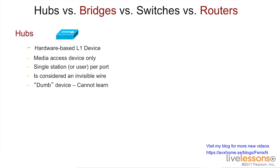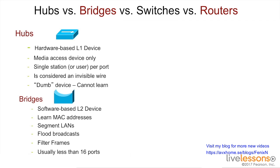The hub was mainly invented to help us create star topologies. A bridge is where we start to talk about optimizing the network. Bridges are generally software-based layer two devices. They help us separate or create multiple smaller collision domains, but they still flood broadcasts — so while they create multiple collision domains, they still have one big broadcast domain. They help us filter some frames, but they usually have a small amount of ports, less than 16.